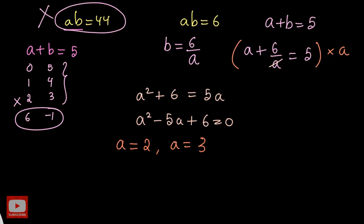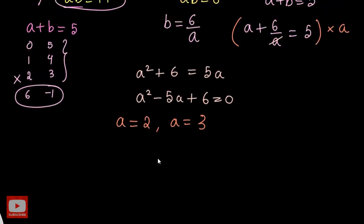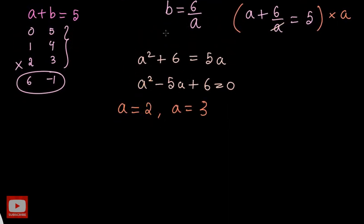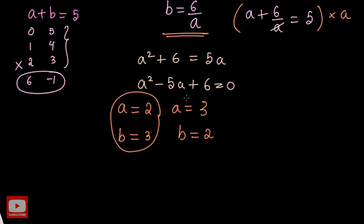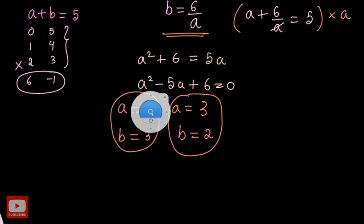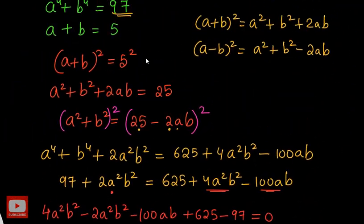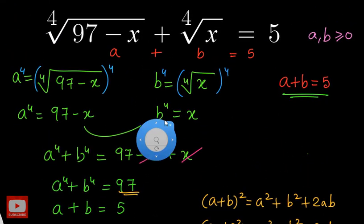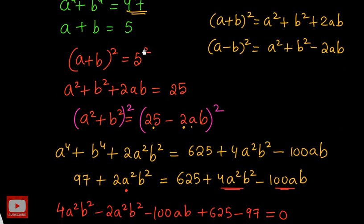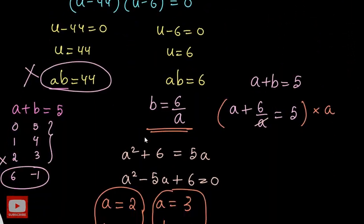Using b = 6/a: when a = 2, b = 6/2 = 3; and when a = 3, b = 6/3 = 2. So the two sets are: first set a = 2 and b = 3, and second set a = 3 and b = 2. Our goal is to find x, so let us go back to the substitutions: a = ⁴√(97 − x) and b = ⁴√x.